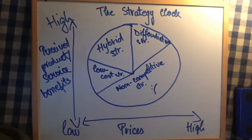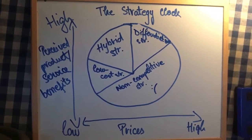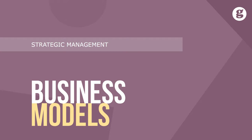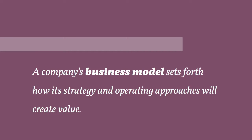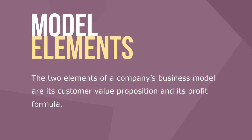Now we continue with business models, explained via a video found on the internet. For a company to matter in the minds of its customers, its strategy needs a distinctive element that sets it apart from rivals and produces a competitive edge. Closely related to strategy is the concept of a company's business model. A company's business model sets forth how its strategy and operating approaches will create value for customers while generating ample resources to cover costs and realize a profit. The two elements of a business model are the customer value proposition and the profit formula.